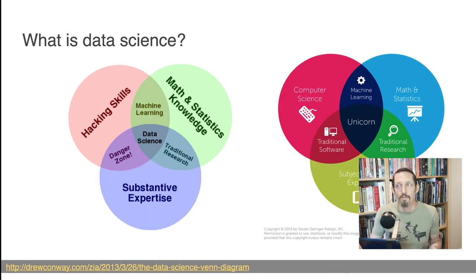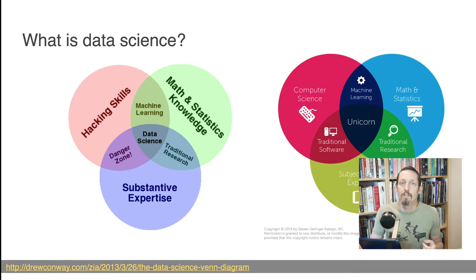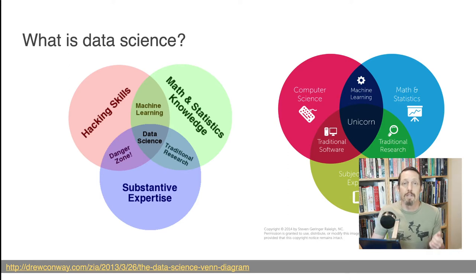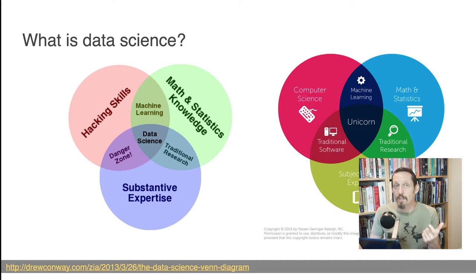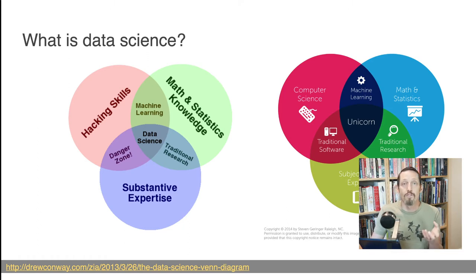The final element, besides math and computing, is actually understanding the topic you are crunching numbers on. Numbers are just numbers — if you don't understand what they mean, it's easy to make mistakes. It's easy to assume something is a good measurement when it's actually a really poor measurement. It's easy to make mistakes if you don't have some sort of domain knowledge for the problem you're trying to solve.